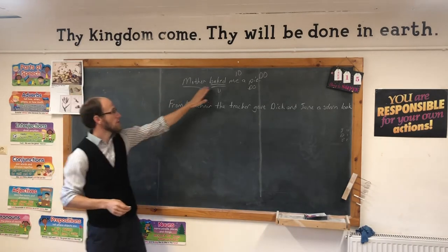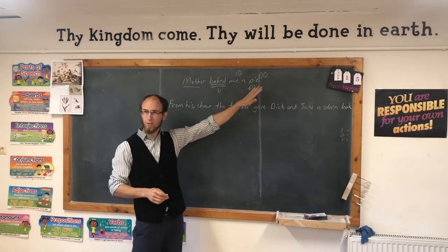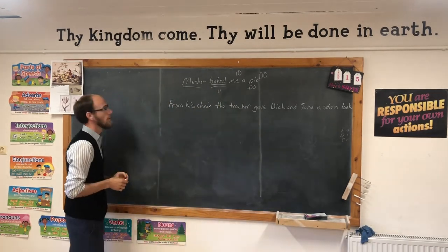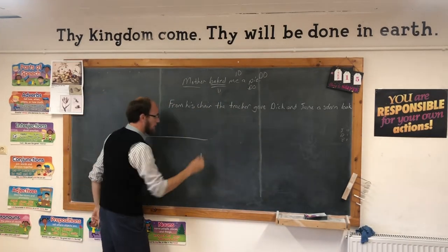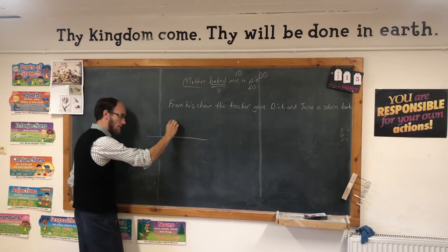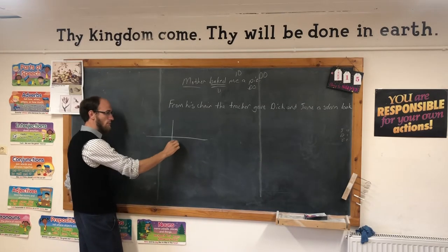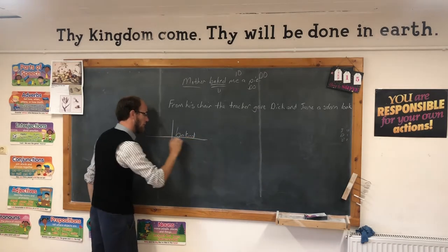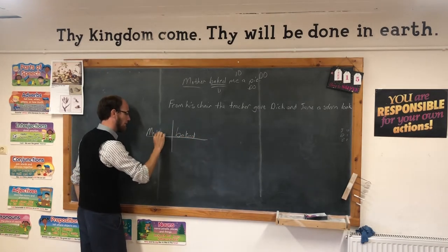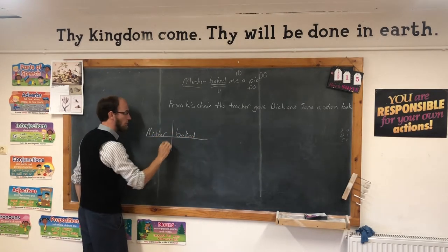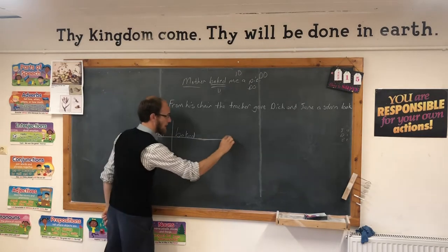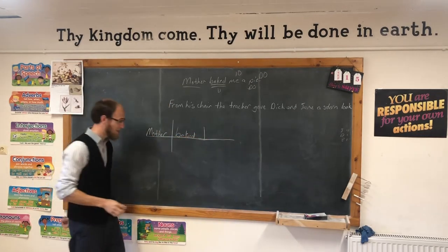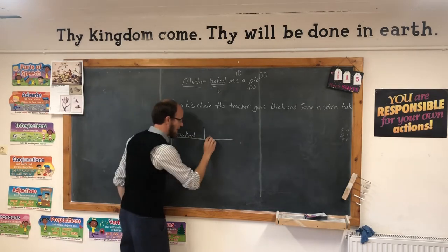Let's diagram this kernel sentence: 'Mother baked me a pie.' We'll start with a baseline, divide it in the center, put the verb here—baked. Mother is the subject. Baked who or what? Direct object—make this line straight, don't slant it. Mother baked pie.